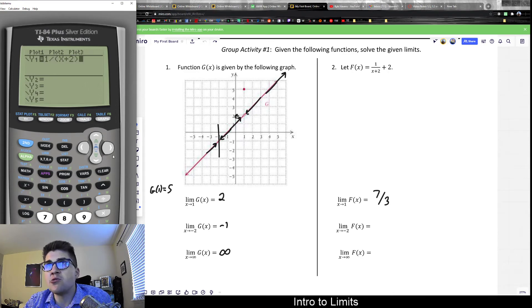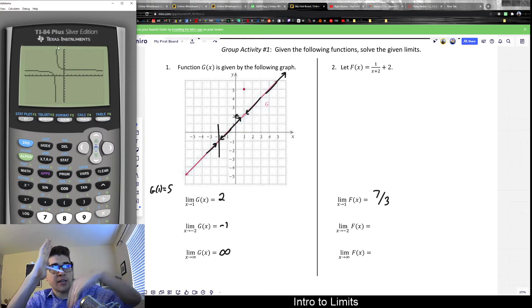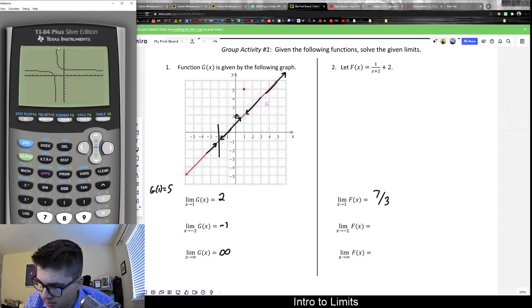And what I can see is towards negative two, notice I get that break in the function, that vertical asymptote occurring. Notice that the left-handed limit towards negative two is minus infinity. The right-handed limit towards minus two is positive infinity. Those do not agree. When they don't agree, remember that limit does not exist.